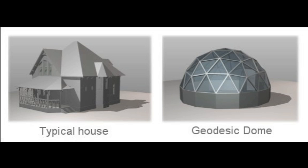Up on screen we've got a typical house on the left and a geodesic dome on the right. It's commonly thought that the geodesic dome would be more complicated, but if we take an overall look, the house has a lot more different shapes.